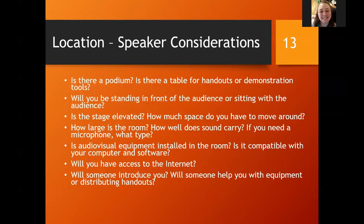When you assess the location, there are several things to look for. Do you have a podium? Is there a table for handouts? Will you be standing in front of the audience or sitting with them? Is the stage elevated? Can you walk around? How large is the room? Does the sound carry? Do you need a microphone? Is audiovisual equipment already there and is it compatible with your computer? For example, if you need to tap into an HDMI and you have a Mac, it's on you to bring the converter. Ask me how I know — personal experience.